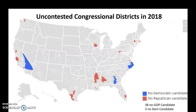Blue is where there's no Democrats standing, red is where no Republicans stood. There were 38 districts where no Republicans stood and three where there were no Democrats. The midterms are the elections which take place midway through a presidential term. Members of Congress — House members are elected every two years, the president is elected every four years. So in the middle of that four-year term, there is a congressional election where all House members are up for election and a third of the U.S. Senate.